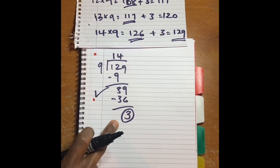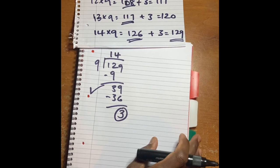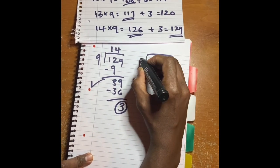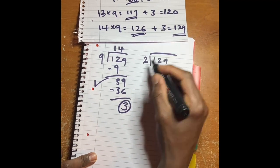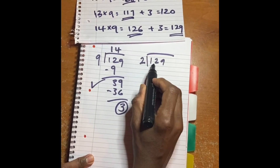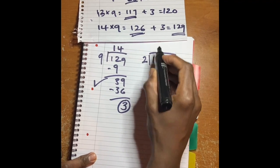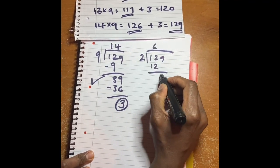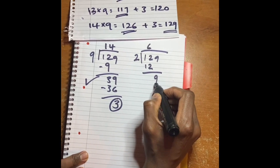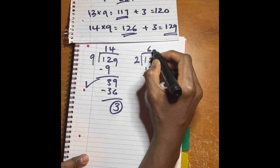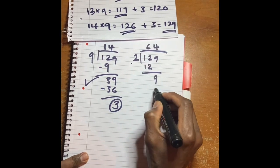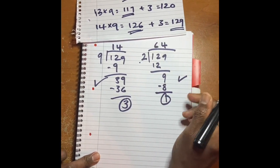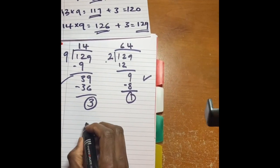Remainder three. Yeah, the first one works for us. 129 divided by nine, remainder is three. Let's go to the second one: 129 divided by two. Two goes into zero. How many times? Two goes to twelve? Six. Drop that one. Two goes to nine how many times? Four. Four times, that's eight. Remainder one.